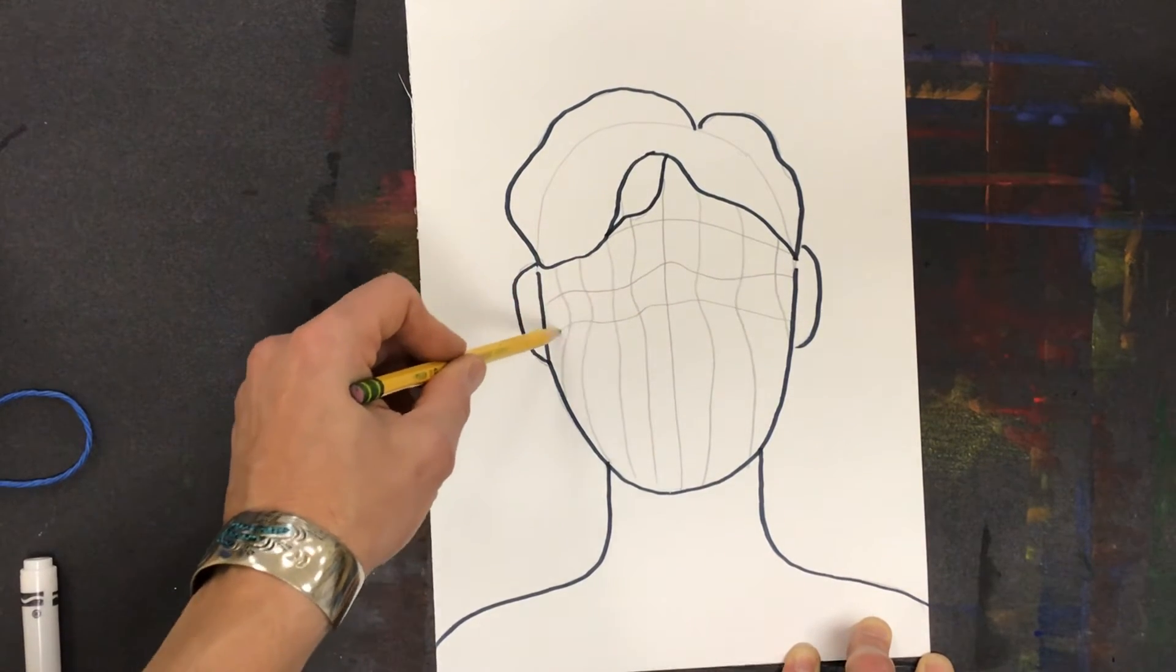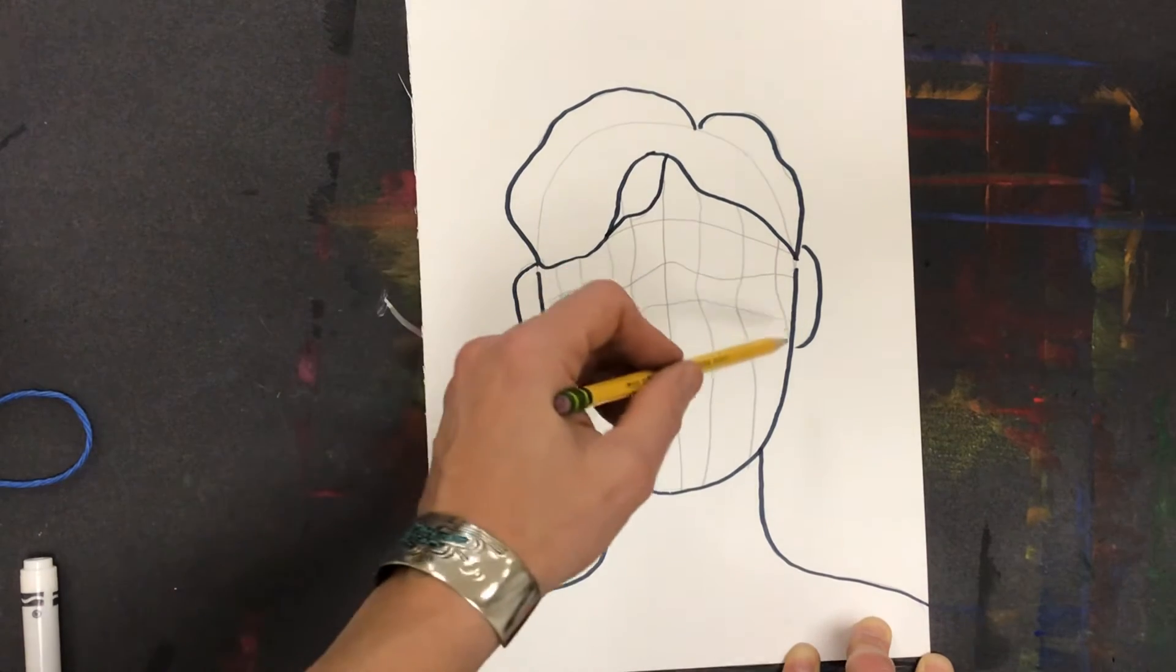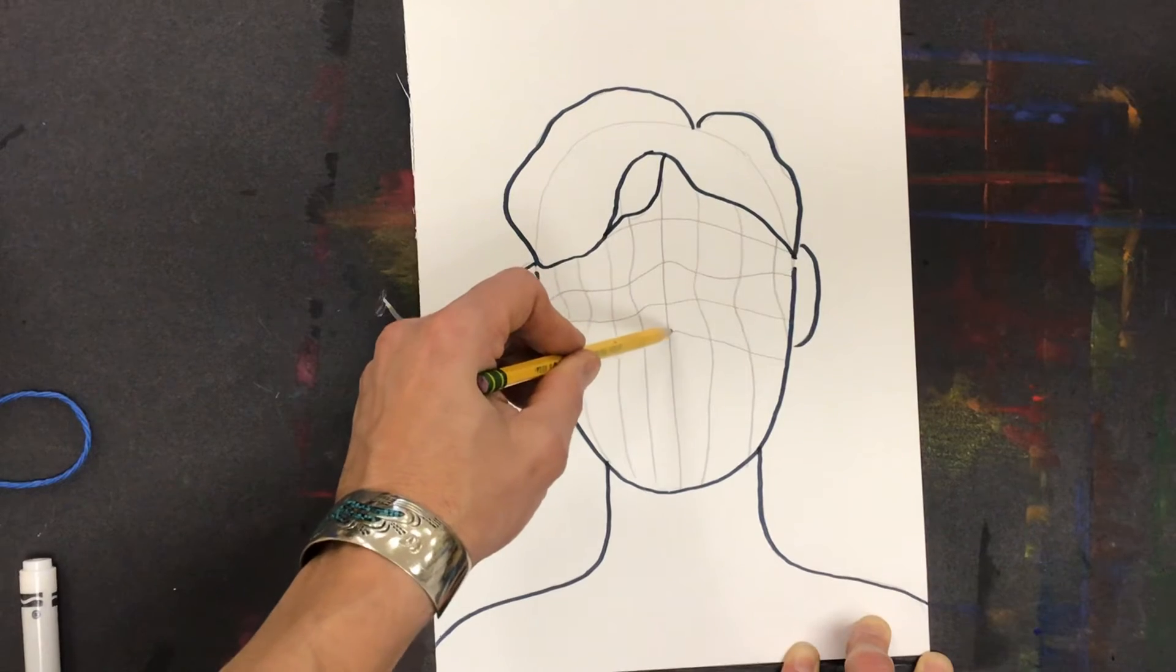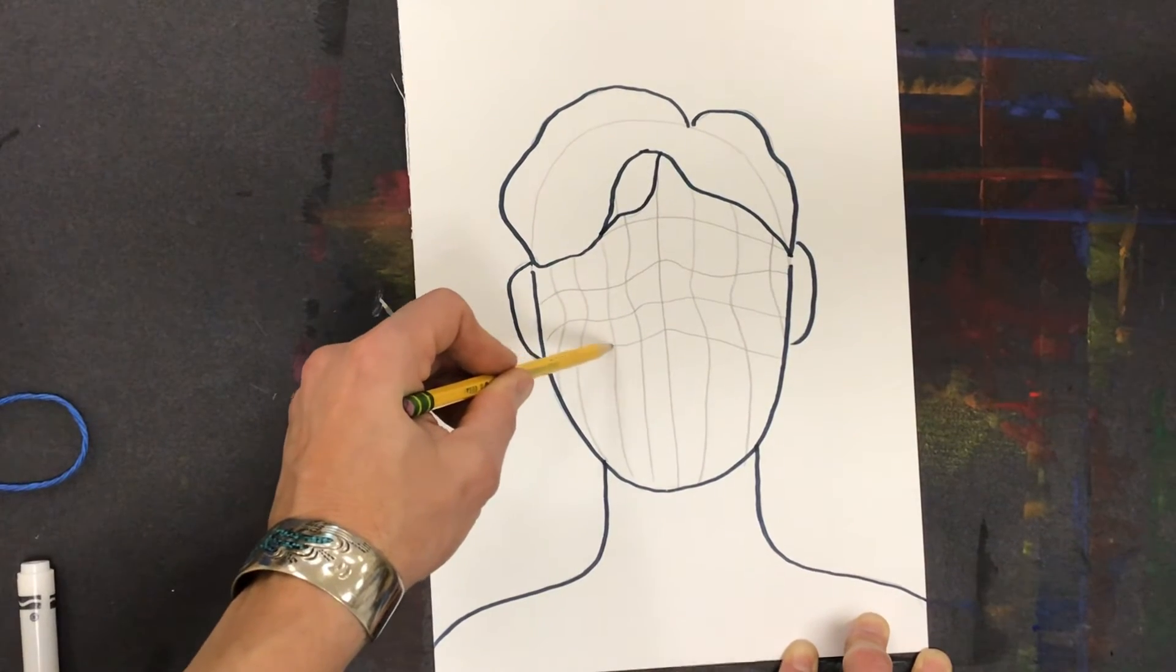Although I'm not drawing this person's nose or eyes, I can tell where they would end up being if they were actually there in the drawing.